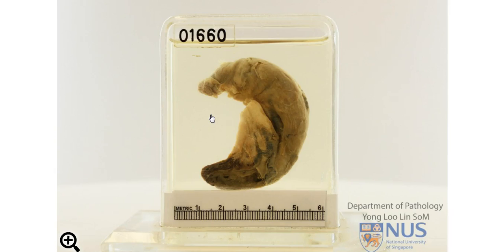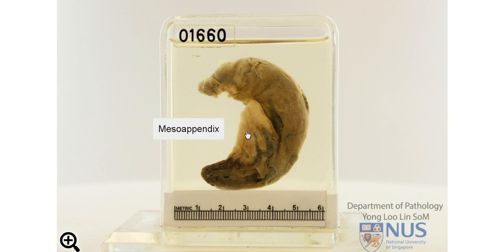Hello, here we're looking at an appendix. This is the proximal end which has been tied off, and here is the tip of the appendix. Just to orientate you a little bit, we're looking at the serosal surface here. This is the mesoappendicial fat, and at the tip region the appendix has been bisected longitudinally.